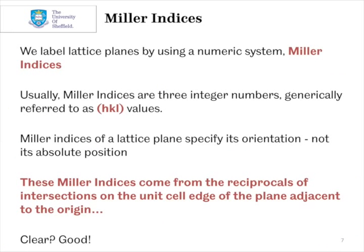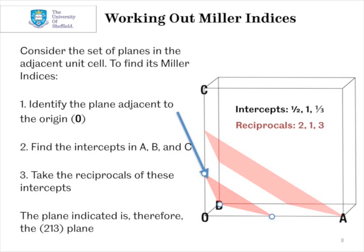We can label lattice planes using a numeric system called Miller indices. Usually these are three integer numbers, generically referred to as HKL values. The Miller indices of a lattice plane specify its orientation, but not its absolute position. And they come from the reciprocals of intersections on the unit cell edge, or the plane adjacent to the origin. Let's see what that actually means.